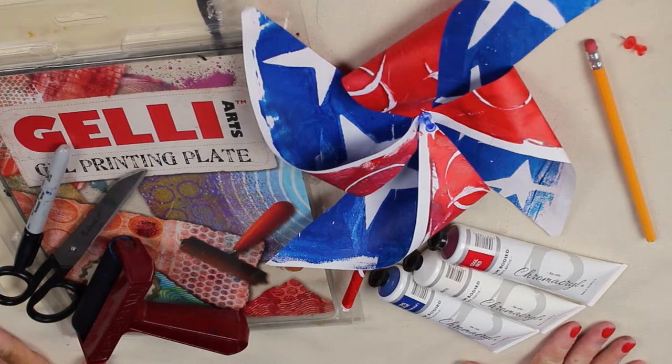we're using Chromacryl Students Acrylic in the colors Cool Red, White, and Cool Blue, a pencil, a pushpin, a jelly printing plate, a brayer, a scissors, and a marker.